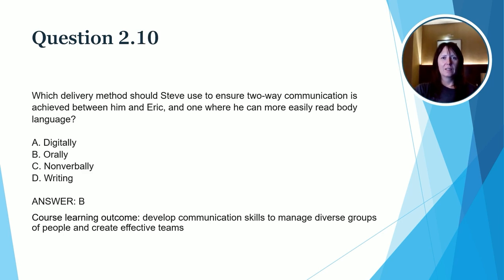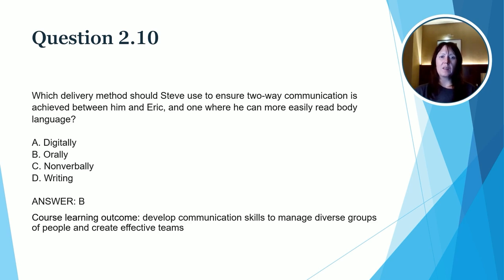The next question asks which delivery method Steve should use to ensure two-way communication with Eric where he can more easily read body language. The options are digitally, orally, non-verbally, and in writing. The correct answer is B, orally. When dealing with an emotional situation where reading body language is important, we always want to communicate orally rather than in writing or digitally. Communicating in person, via video conference, or even by phone would be better than the other methods. This relates to the learning outcome: develop communication skills to manage diverse groups of people and create effective teams.